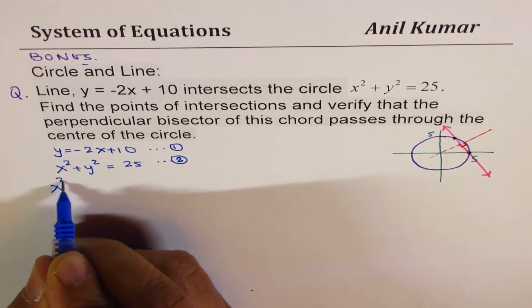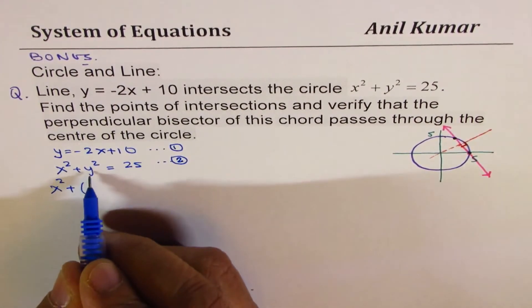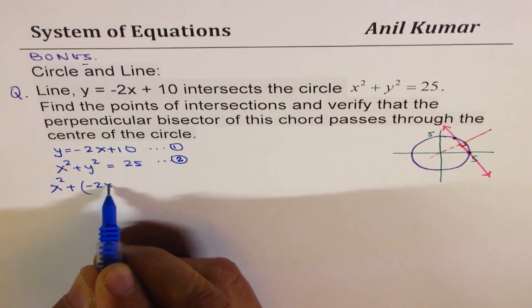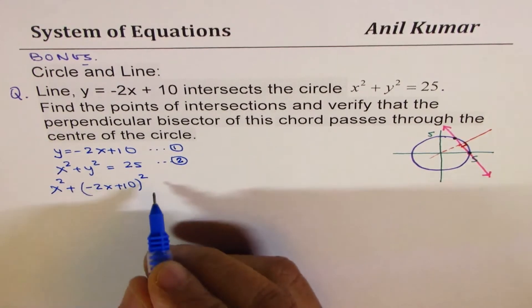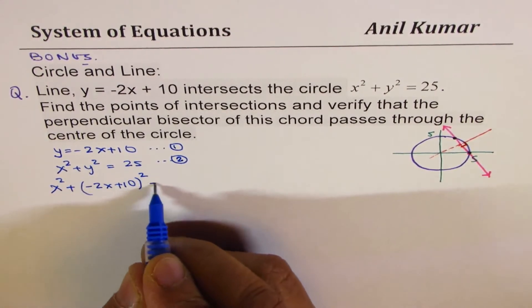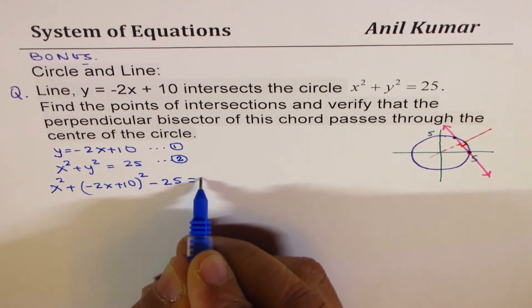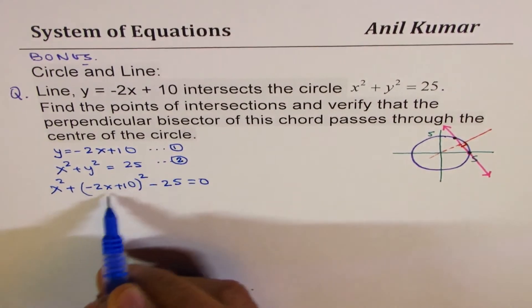We can always substitute the value of y in equation number 2, giving us x squared plus, instead of y, I'm substituting minus 2x plus 10 whole square. Let's bring 25 also to the left side, so we get minus 25 equals 0. Now we'll expand it.